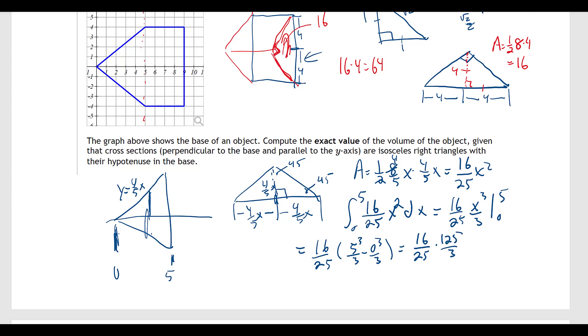So it's 16 over 25 times 125 over 3, because that part is 0. So this reduces here and here, leaves us with 5, so we end up with 80 over 3.